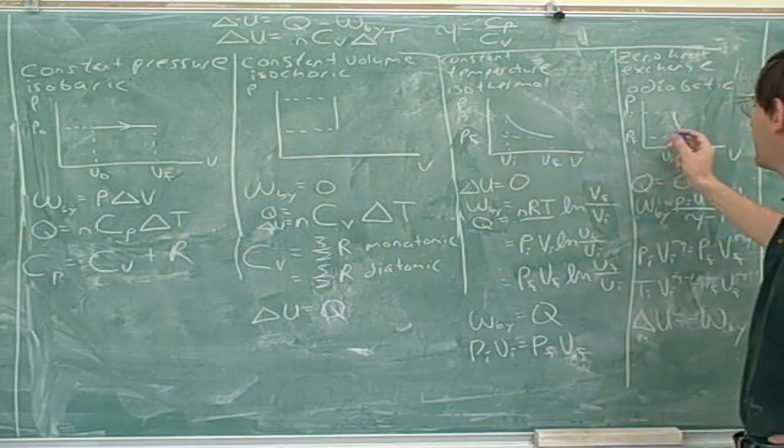All right. A couple more things. Sometimes the instructors here like you to know which of these is steeper, the isotherm or the adiabat. So an isothermal curve is called an isotherm, and an adiabatic curve is called an adiabat. Well, we're going to try to figure out which is steeper, an isotherm or an adiabat.